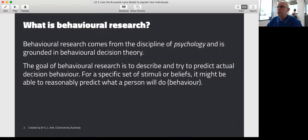Behavioral research comes from psychology and is grounded in behavioral decision theory. Its goal is to describe and try to predict actual decision behavior. For a specific set of stimuli or beliefs, it might be able to reasonably predict what a person will do or what behavior that person will exhibit, and the vehicle it's going to use here is what we call a lens model.